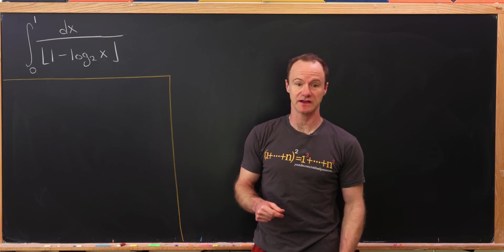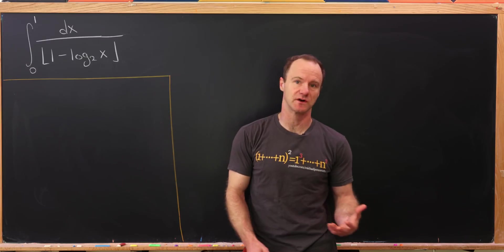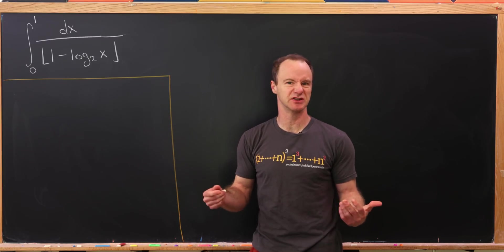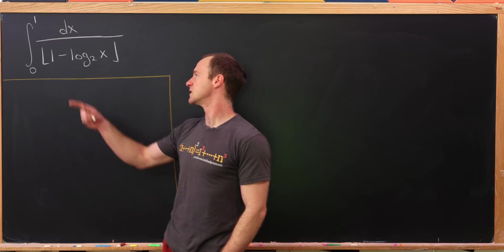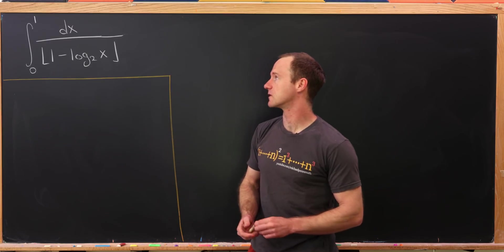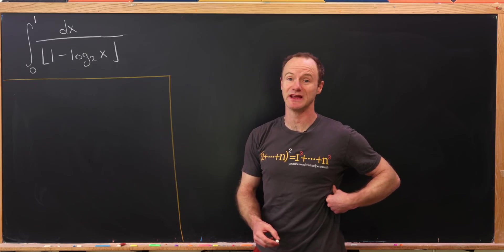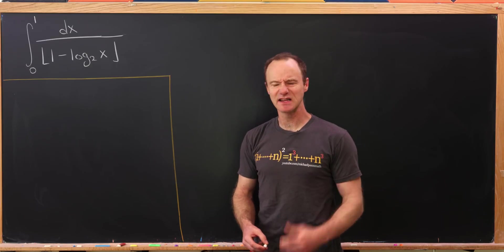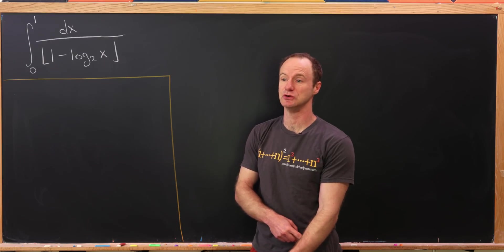So integrals are inherently continuous objects, whereas this has the floor function which turns this into a discrete operation. Okay, so let's see what we have. We'd like to calculate the integral from 0 to 1 of dx over the floor of 1 minus the log base 2 of x. That's another thing that I think makes this interesting, the fact that we have a log base 2 there.